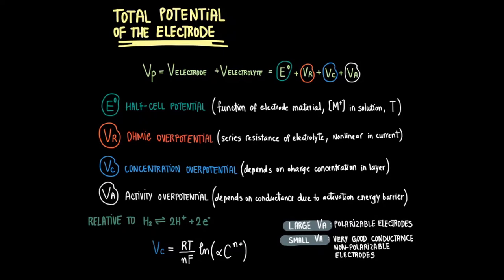Recall that the half cell potential is a function of the electrode material, the metal ion concentration solution, and the temperature. Meanwhile the activity over potential depends on the conductance due to the activity energy barrier. It will be larger for polarizable electrodes and smaller for non-polarizable electrodes with very good conductance.